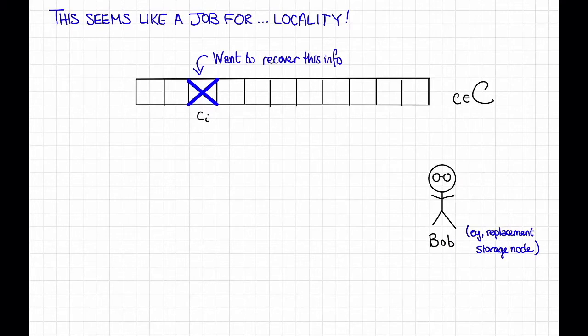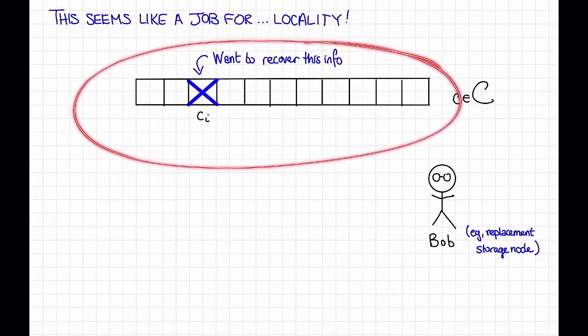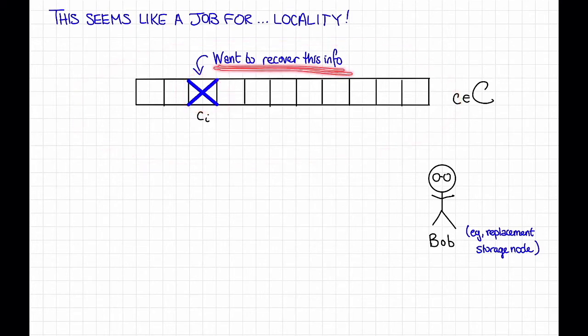In more detail, here's that coding theoretic problem from the previous slide. We have our codeword with our erasure, and we want to recover this information. For example, maybe we want to set up a replacement storage node for the one that we lost.